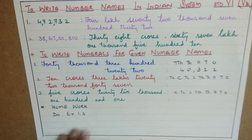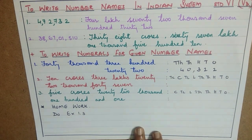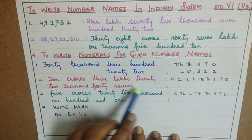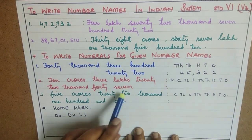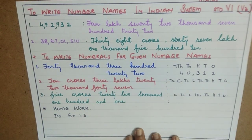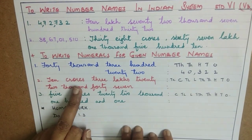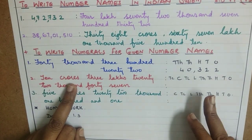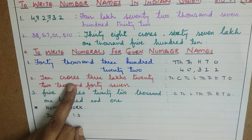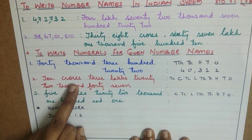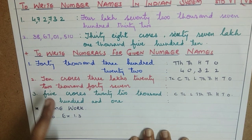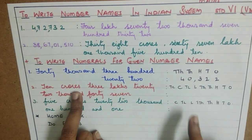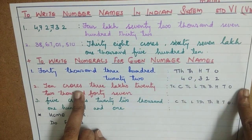Now: 10 crores, 3 lakhs, 22,047. Here you should be very, very careful. Whenever a number is given as 10 crores, you should always remember that it is a 9-digit number. So whenever such a number name is given, make sure that you get 9 digits in the answer.